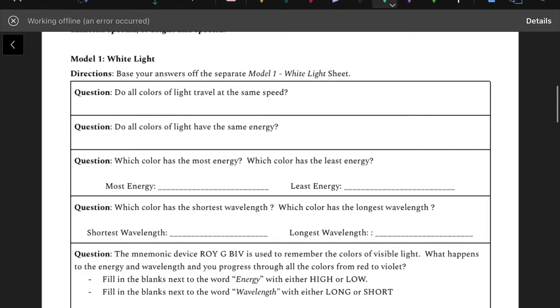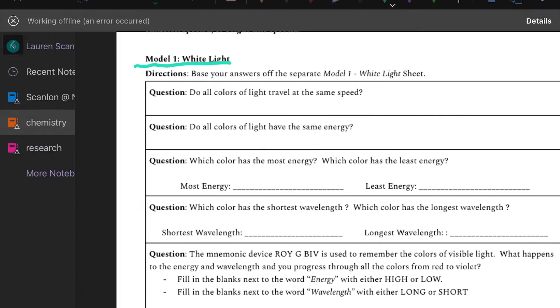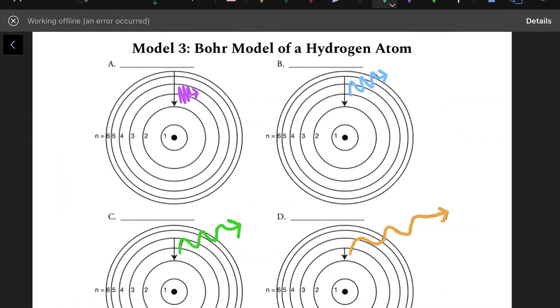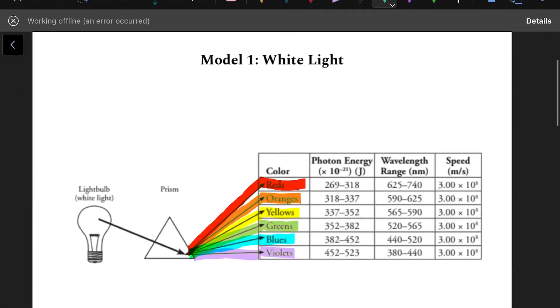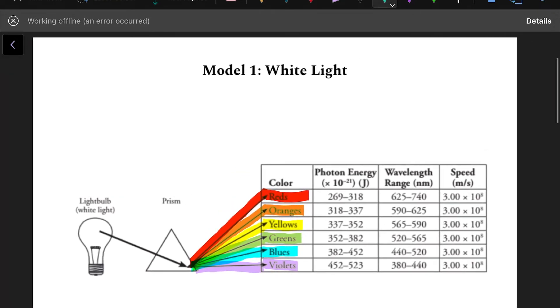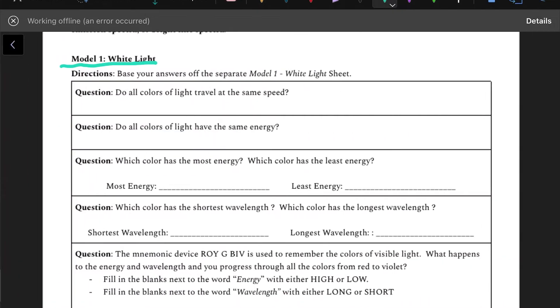So this first section, model one, will be based on the model one picture, which is this. All of this information, the colors, the energy, the wavelength, the speed, all the questions in model one will come, for the most part, from this chart. Never things you have to memorize.